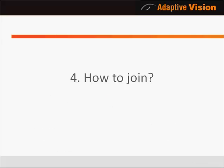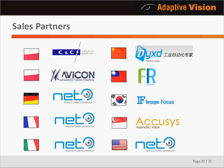I will now answer the question of how to start using the products. Adaptive Vision has a worldwide network of sales partners who provide complete service and local support in your timezone. In Europe and in the US, our products are delivered by NET GmbH. In Asia, please contact Donning Sundae Electronics for China, Fadracer for Taiwan, Image Focus for South Korea, and Accusys for Singapore. For direct contact, our own offices are located in Gliwice, Poland and in Taipei, Taiwan.